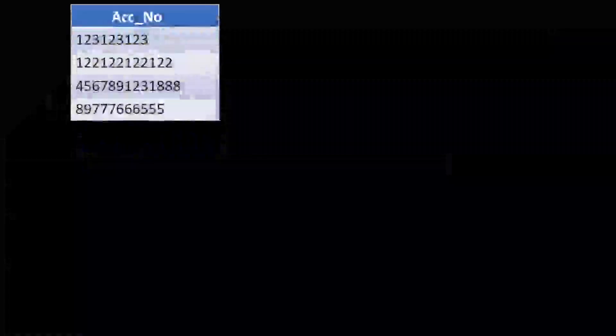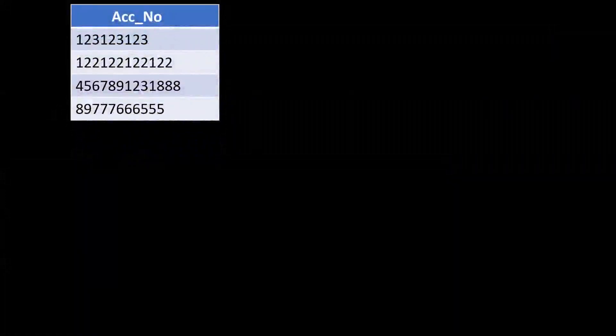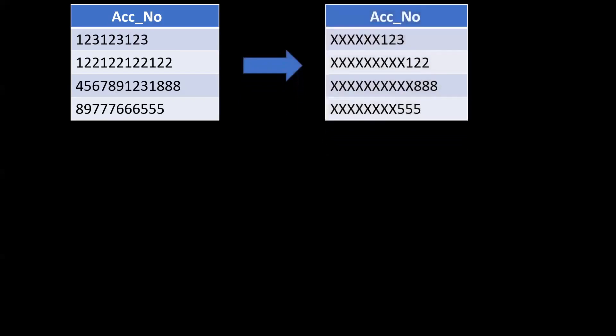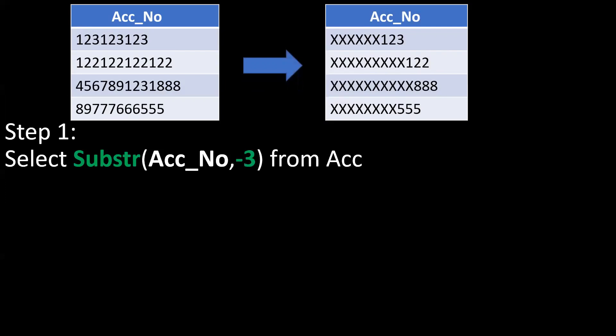Now, masking of account number — this is one of the important ones. Different banks will have different patterns and different digit lengths, so it will not be a fixed number of characters like a phone number or other number. The requirement is to display only the last three digits of the particular account number, with the rest masked with 'X'. By using substring, we extract the last three digits.